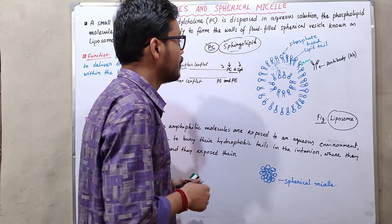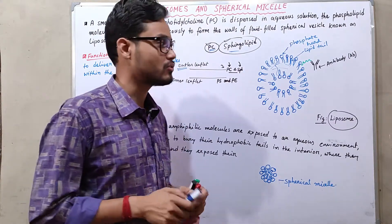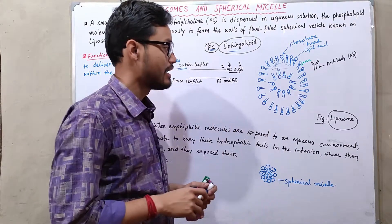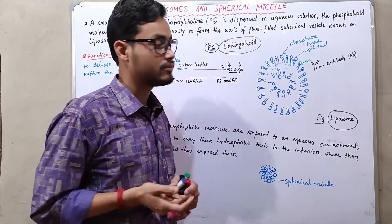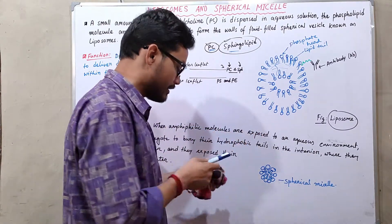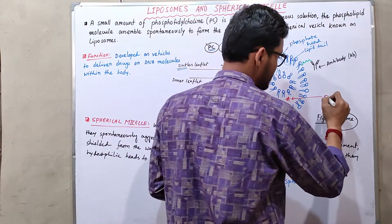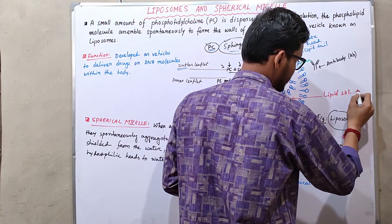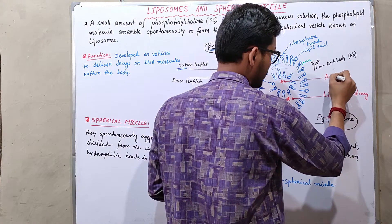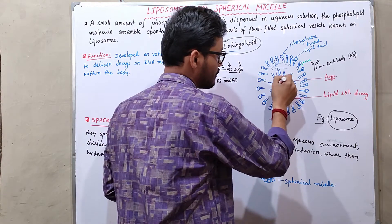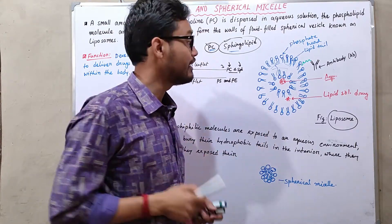Liposomes are developed to deliver drugs in our body. For example, if we have cancer in a particular organ like the liver or kidney, we create a liposome from those cells, inject it into the body, and the liposomes fuse with the target cells to deliver drugs. Liposomes can carry two kinds of drugs: lipid-soluble drugs stored inside the lipid bilayer, and aqueous drugs stored in the aqueous interior environment.